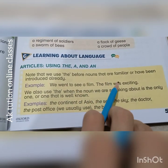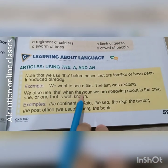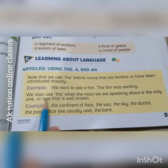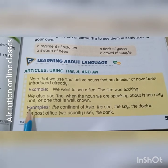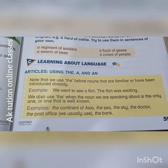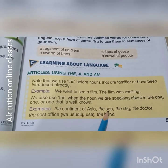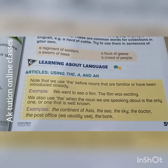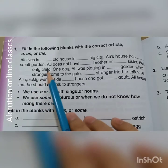Note that we use 'the' before nouns that are familiar or have been introduced already. For example: we went to see a film — the film was exciting. We also use 'the' when the noun is the only one or is well known, for example: the continent of Asia, the sea, the sky, the doctor, the post office.